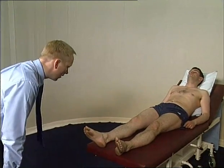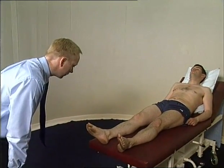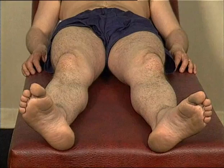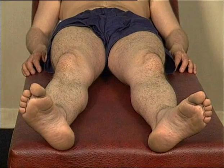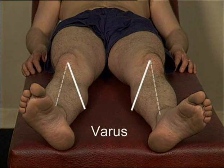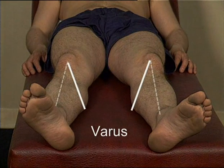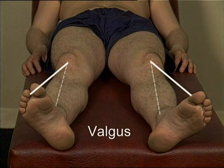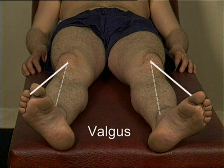Look initially from the end of the bed for loss of symmetry and loss of normal leg alignment, such as varus deformity where distal to the knee is deviated medially leading to a bow-legged appearance, or valgus deformity where distal to the knee is deviated laterally leading to a knock-kneed appearance.